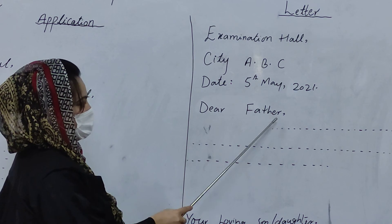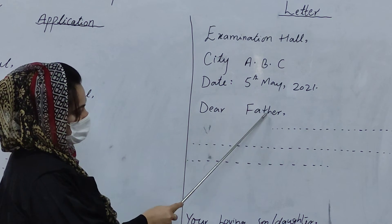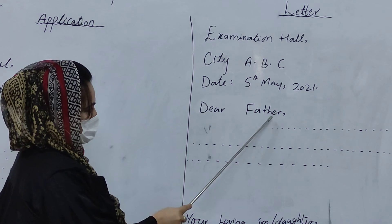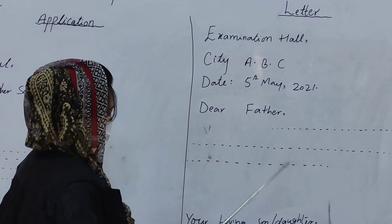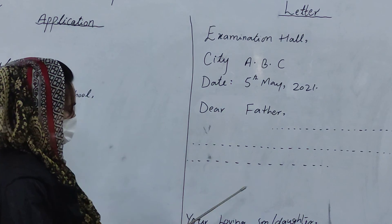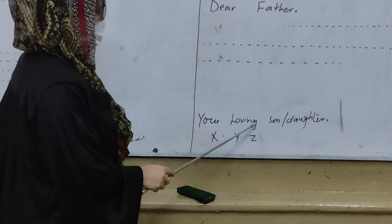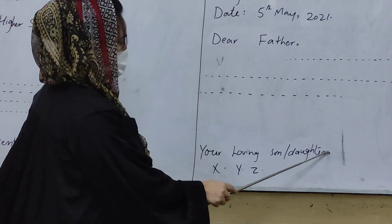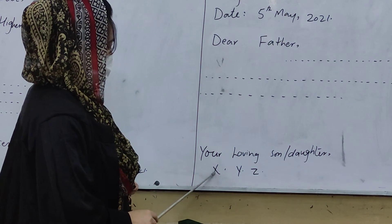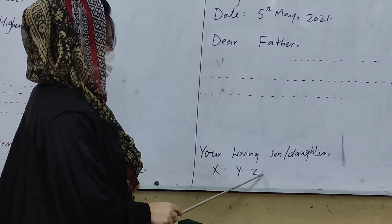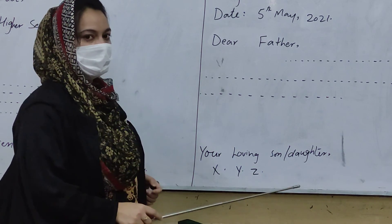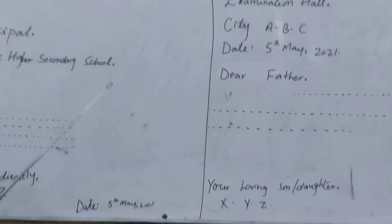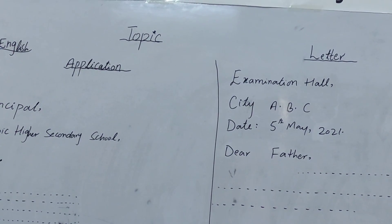Then 'Dear Father,' with D capital and F capital, after that a comma, and you start from here. You have to follow this pattern. In the end: 'Your loving son' or 'daughter,' comma, then X dot, Y dot, and Z. You must follow this pattern of application and letter.